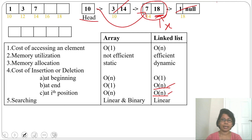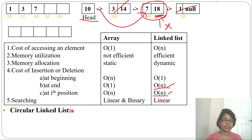For searching: in arrays, both linear and binary search are possible. In a linked list, only linear search is possible.